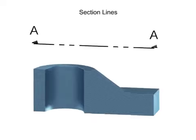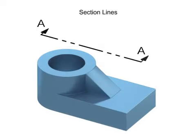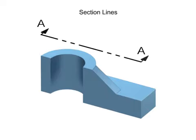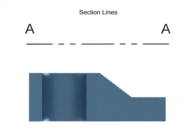There are a number of different types of sectional views that can be drawn. This is a full section view, generated when the cutting plane passes through the entire part.